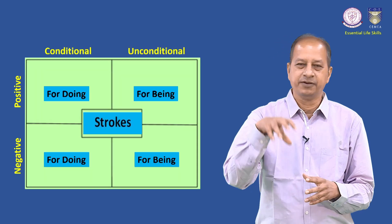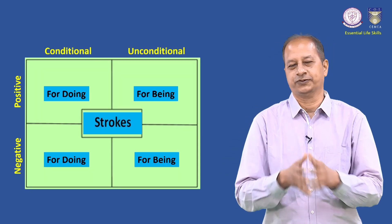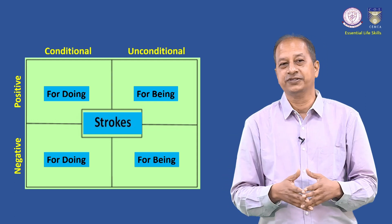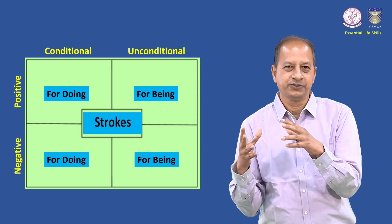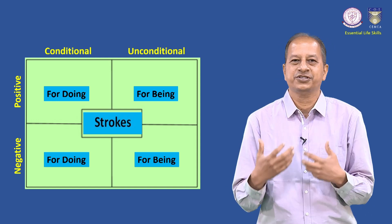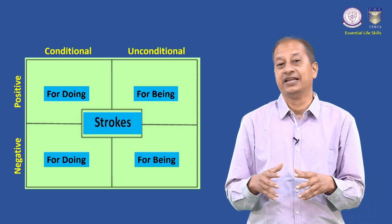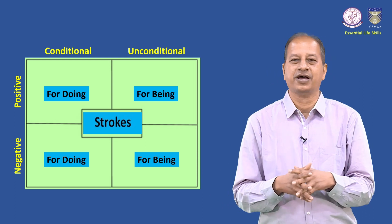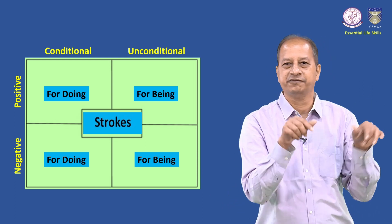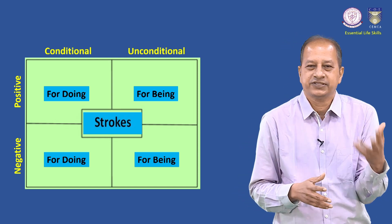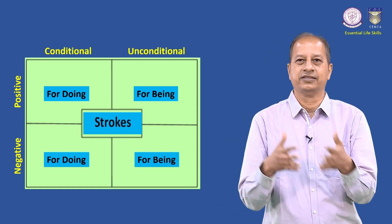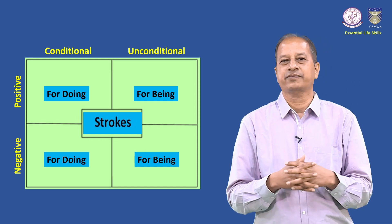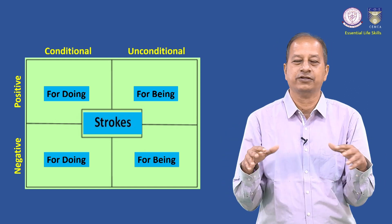That brings us to a very important aspect of interpersonal relationships: strokes. According to Eric Byrne, the founder of Transactional Analysis, a stroke is a unit of recognition. It is also a unit of attention which provides stimulation to an individual. There are two big categories of strokes: positive strokes and negative strokes, and these strokes can be both conditional or unconditional.